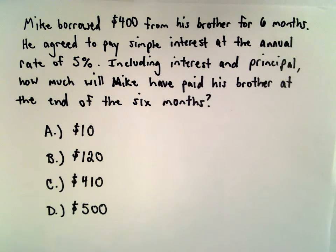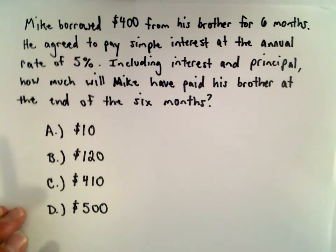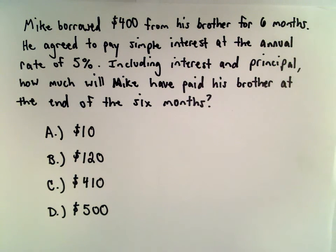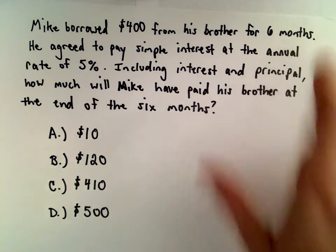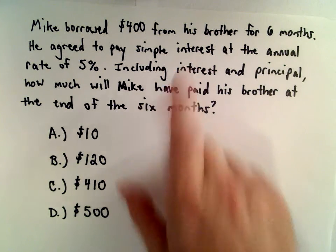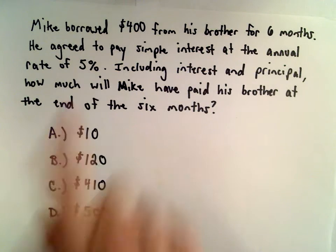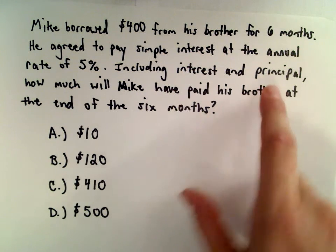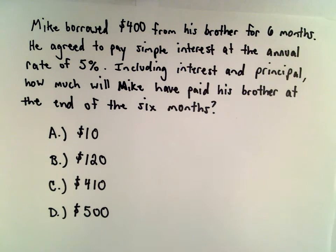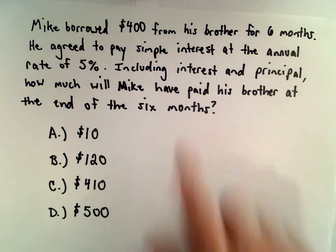This is question number one of a complete GED practice test. For the first five questions, you are not allowed to use a calculator. In problem number one, Mike borrowed $400 from his brother for six months. He agreed to pay simple interest at the annual rate of 5%. Including the interest and principal, how much will Mike have paid his brother at the end of six months?